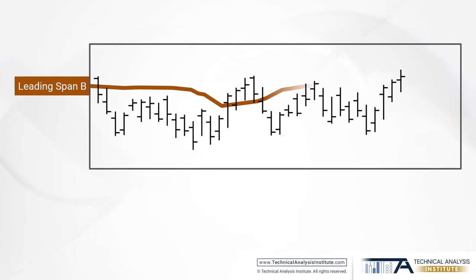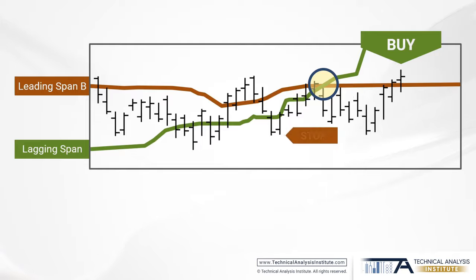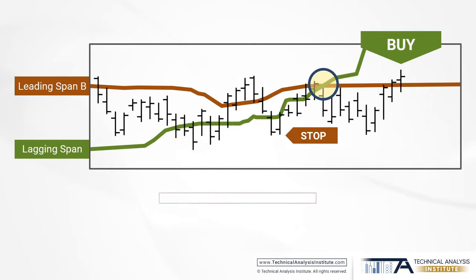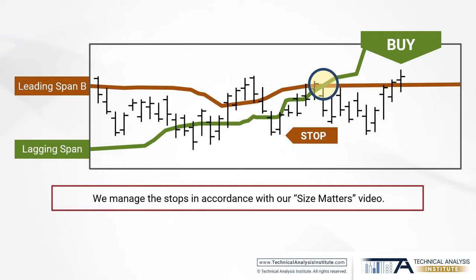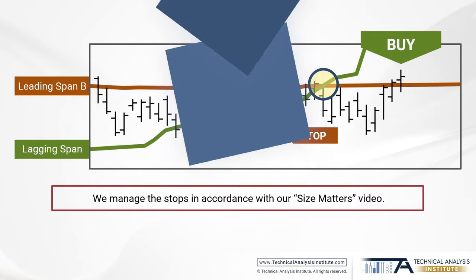We enter long when the lagging line crosses span B. Secondly, we place our stops at the lowest of the two previous relative lows. Thirdly, we manage the stops in accordance with our Size Matters video — I strongly suggest you watch that video to better understand the way we manage our trades. For now let's look at a hypothetical scenario.